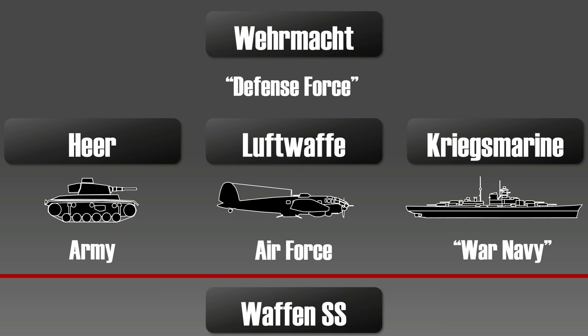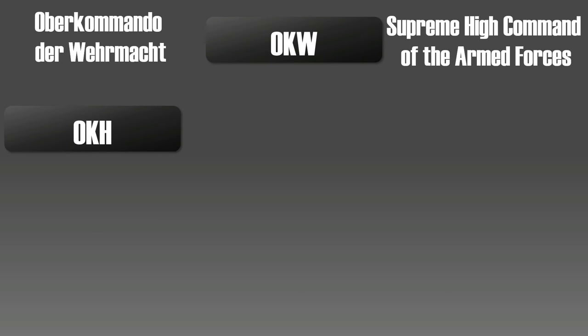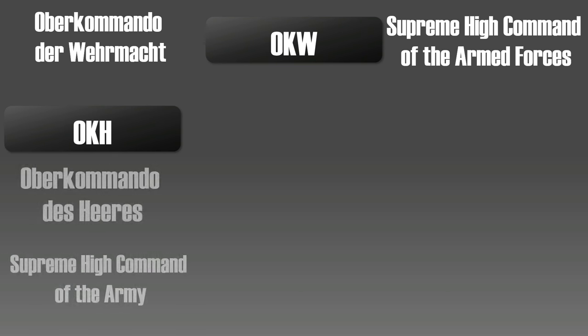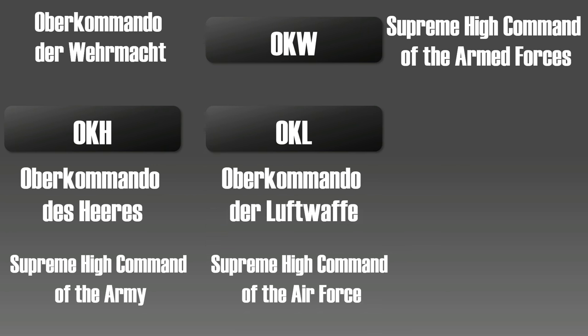So let's take a look at the command structure. The high command of the Wehrmacht was the Oberkommando der Wehrmacht, or OKW for short. Then there was the OKH, Oberkommando des Heeres, for the Army. Then there was the OKL, Oberkommando der Luftwaffe, for the Air Force.